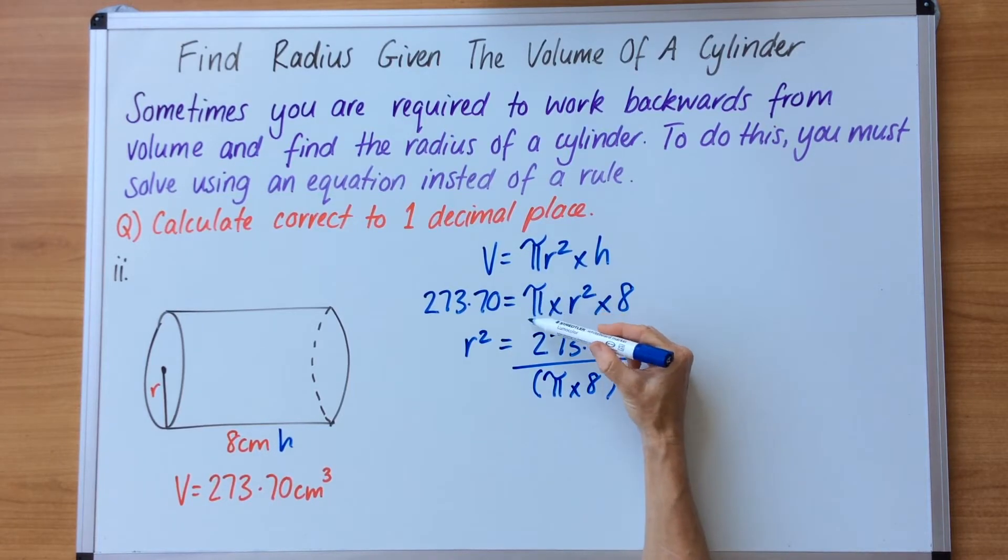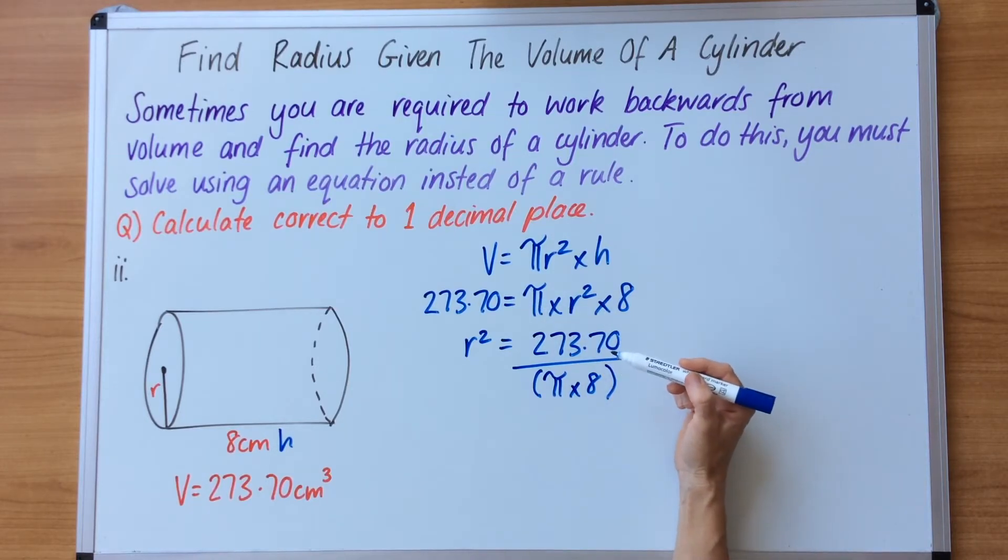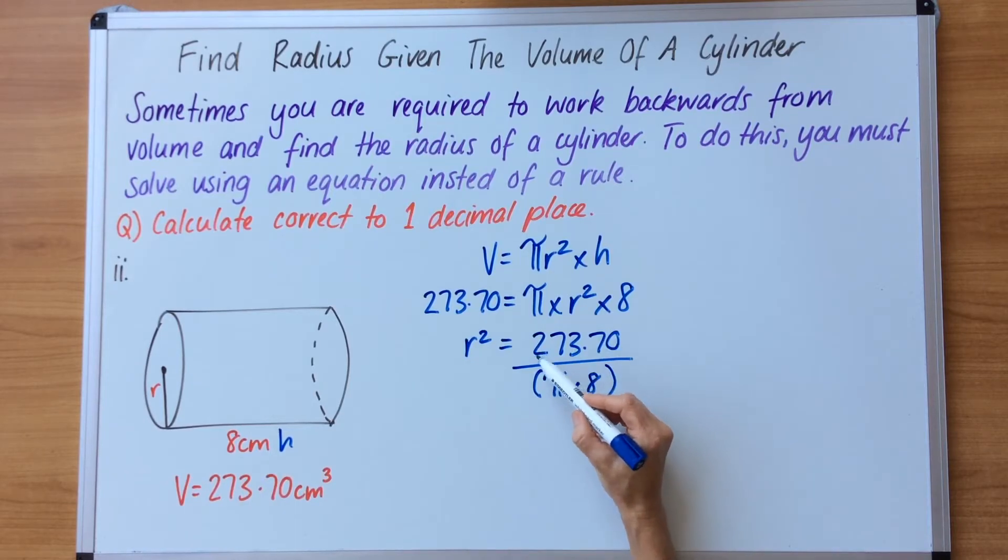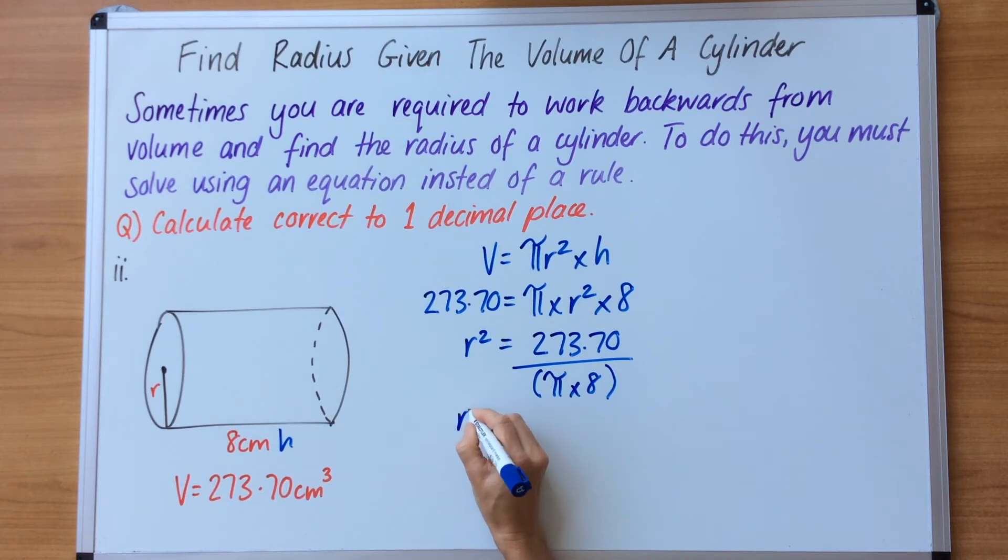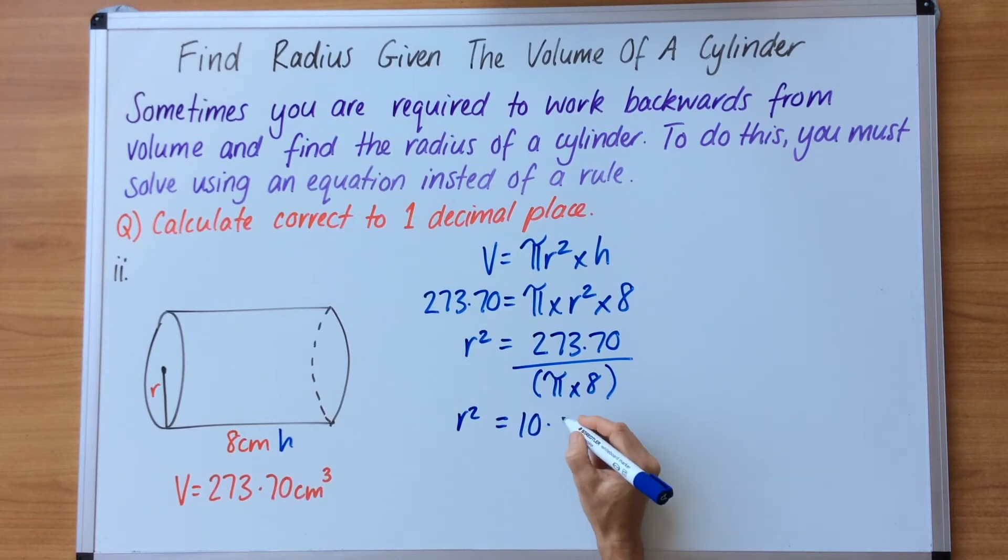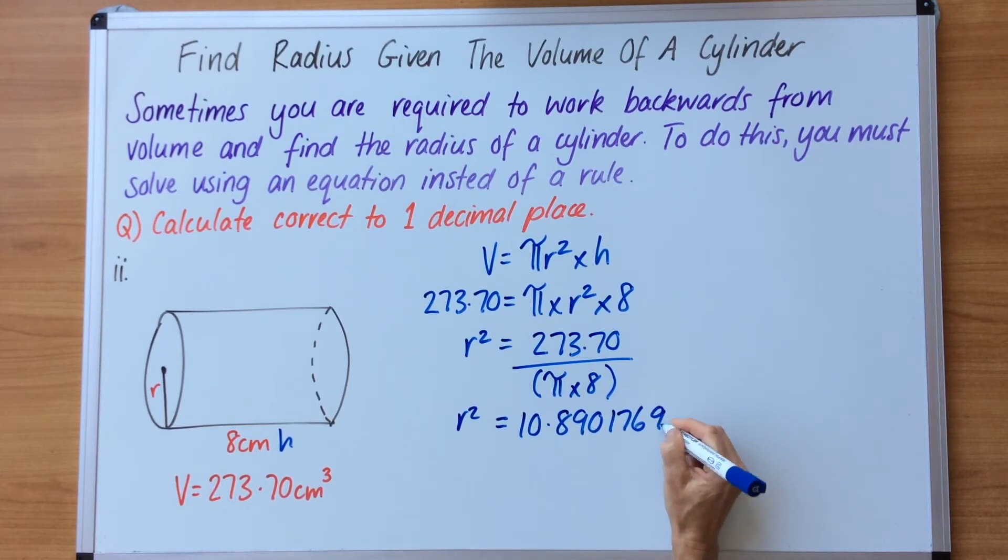Now remember pi is actually standing for numbers, so don't get confused by thinking letters on the left, numbers on the right. This actually is a number, it's a button you're going to use on your calculator that represents a very long number. Now we're at this phase here, we can start to calculate. So you get your calculator and you're going to punch in 273.70 ABC fraction button, bracket pi times 8 bracket equals, and we write the answer out completely: 10.89017698.